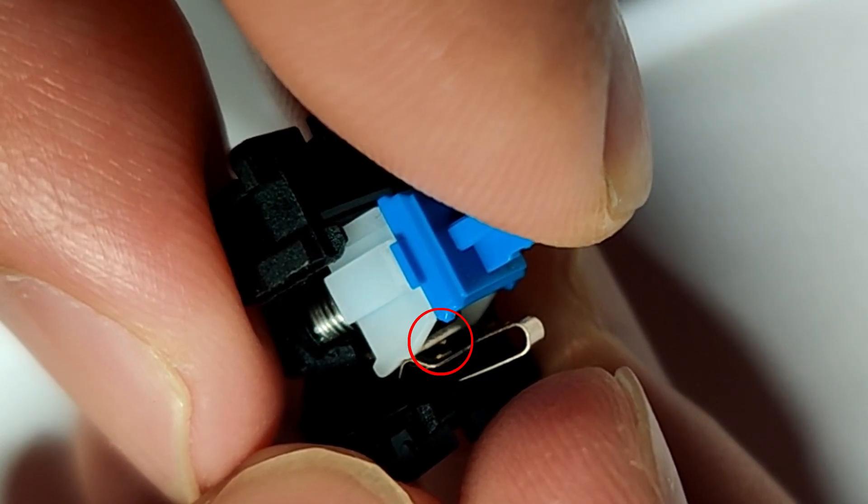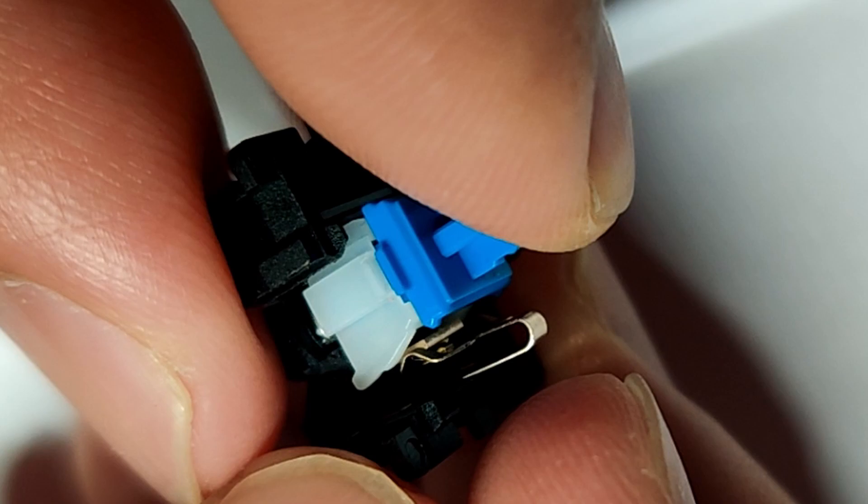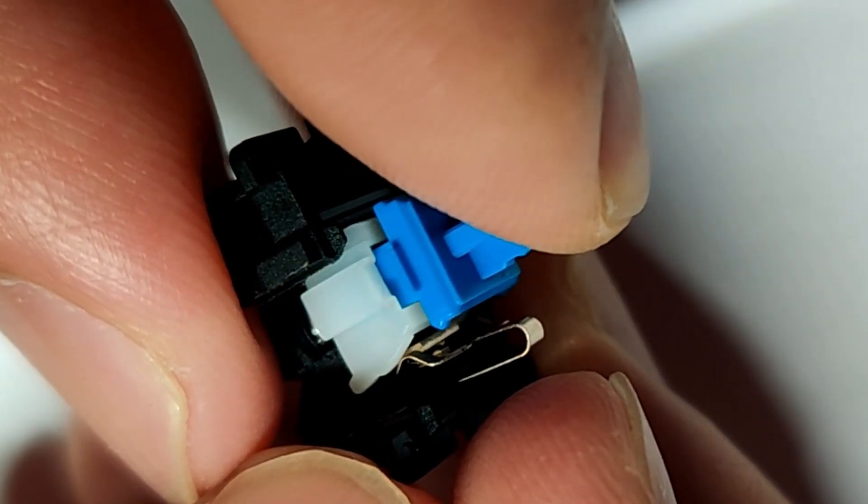This then makes contact with the copper plate and closes the connection. When we flip the switch upside down, the same applies. But, it's not actually gravity that pushes the white collar down. It's the leaf spring.